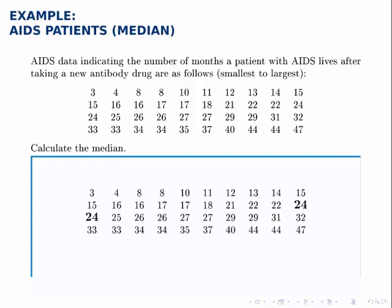Notice that the two middle data points are both 24. So the average of those two is also 24. Therefore, the median of this data set is 24.